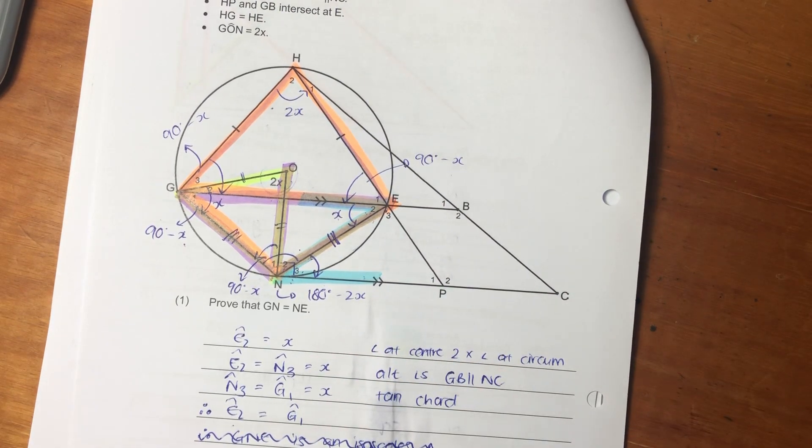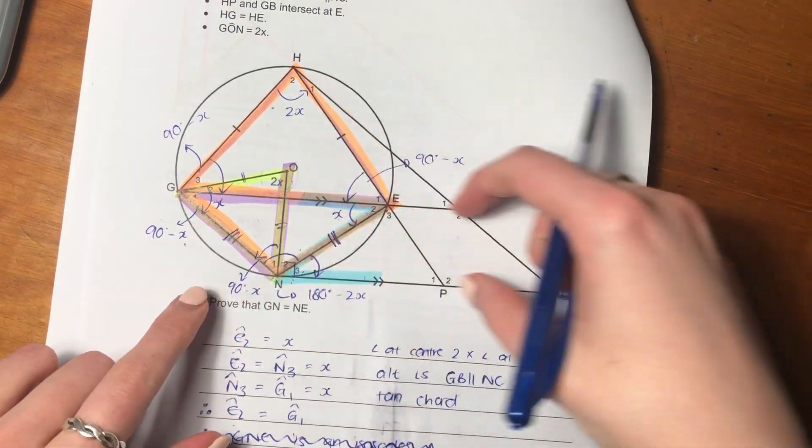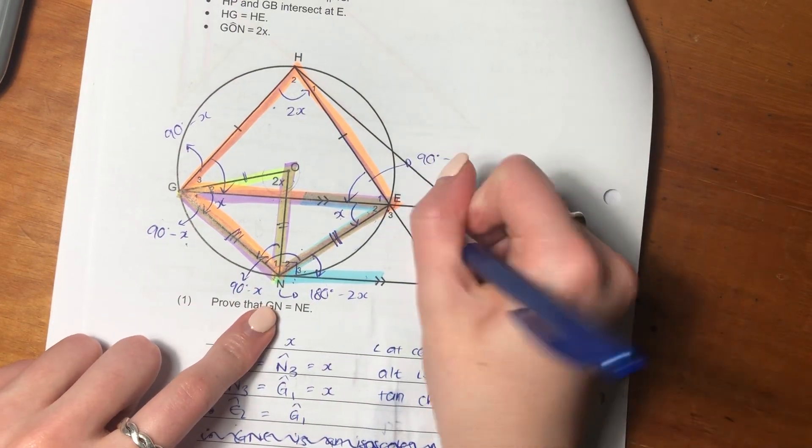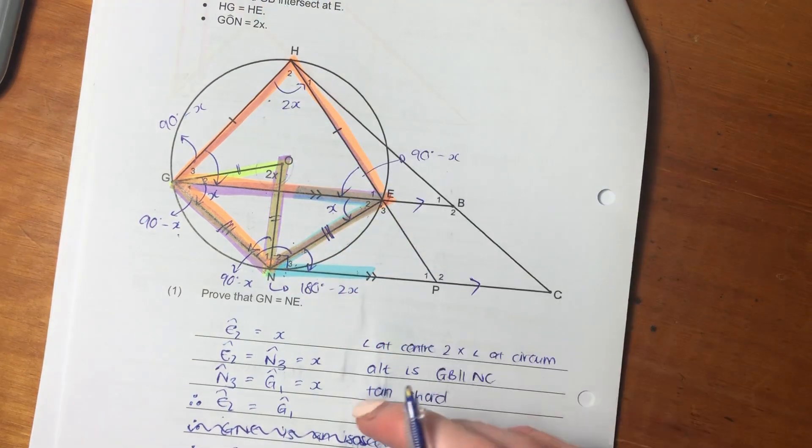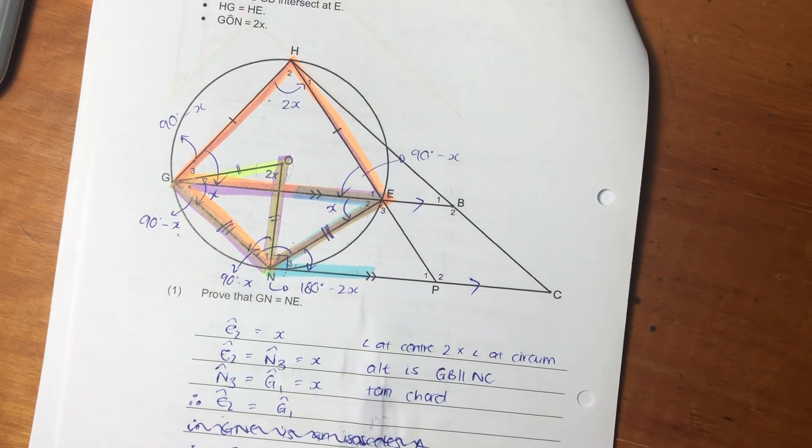Well, the proportionality theorem comes into play because these two lines are parallel, which means there's proportionality there. So because there's proportionality, we can start saying some things about what's in here.